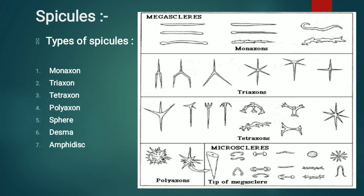Desma is formed by the deposition of successive layers of silicon on ordinary spicules. The next type is amphidisc, which contains discs at both ends; amphidisc spicules are found in freshwater sponges. The microscleres are smaller and found throughout the mesenchyme; they are of two types: asters and spines. Spines support and protect the body and are useful in classification.